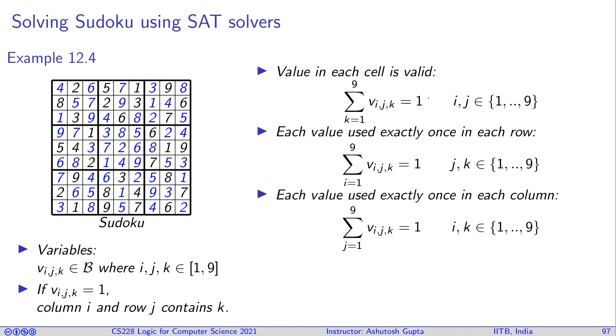Similarly, you build the constraint for each column. Now you fix your i and vary j. It will encode the similar thing.